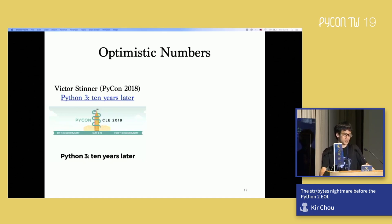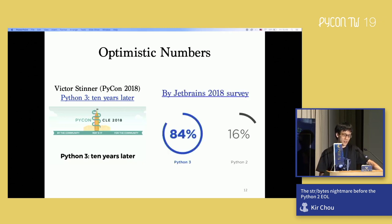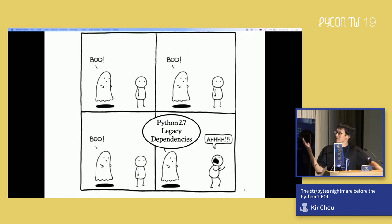I have some optimistic numbers behind. You can watch the talk by Victor Steiner, who is the CPython core developer. He talked about Python 3 10 years later on PyCon 2018, mainly about how Python community pushed all developers to use Python 3. We did have a nice number here by JetBrains survey this year. Last year, the number they got is 84% of developers use Python 3 by default.